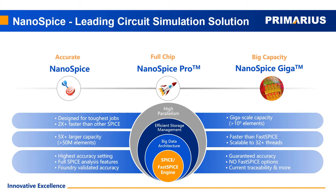Nanospice is a high-performance parallel SPICE simulator that typically runs two times faster and has five times larger capacity compared to its SPICE counterparts. As a SPICE simulator, Nanospice runs on the highest accuracy setting as well as providing full SPICE analysis features.